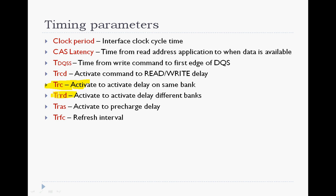TRRD is another timing parameter that is fairly important. It is the activate-to-activate delay on different banks. Typically a memory has several banks — 4 or 8. You can interleave the banks, but you still have to ensure that activations of different banks have at least TRRD between them. TRCD is the activate-to-command delay. Once you have activated a row, you can only issue a command after TRCD time has elapsed.